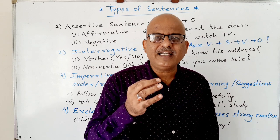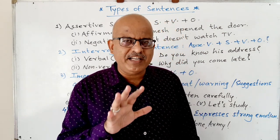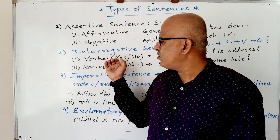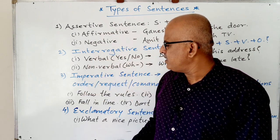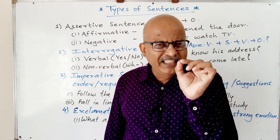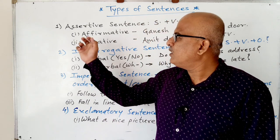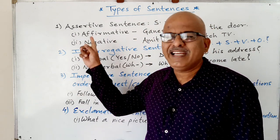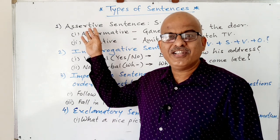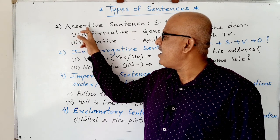What are the types of sentences? How many are there? Basically, there are four types of sentences: Assertive Sentence, Interrogative Sentence, Imperative Sentence, and Exclamatory Sentence.